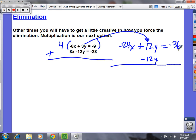Plus 12y equals what's -9 times 4? Negative 36. Okay, your bottom you don't touch, just copy and paste. 8x minus 12y equals -28. Okay, add them up. What's -24x and 8x? What's -24 plus 8? Negative 16. -16x.